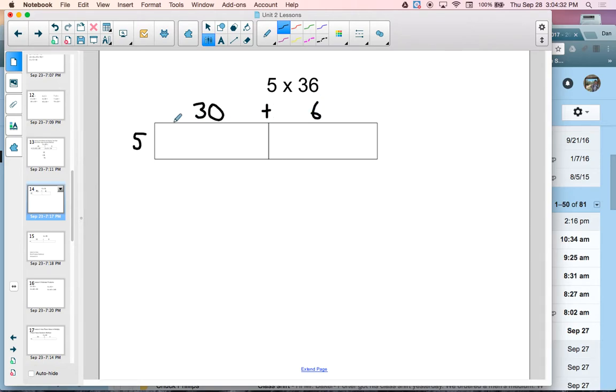And then I'm going to multiply. The basic multiplication fact here is 5 times 3, which is 15. Then you bring down the 0. 5 times 30 is 150.